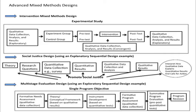Returning to a figure of advanced designs, we have three types: an intervention mixed methods design, a social justice design, and a multi-stage evaluation design. In each of these, there is a basic design at the center surrounded by a box indicating the advanced design. For example, in the intervention design diagram, there's a box around the experimental study, and within it we see a quantitative project followed by a qualitative follow-up.